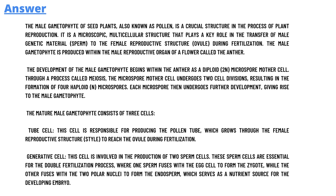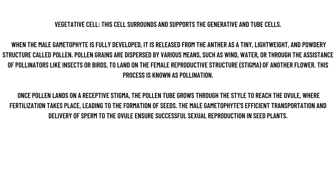When the male gametophyte is fully developed, it is released from the anther as a tiny, lightweight, powdery structure called pollen. The pollen gets dispersed by various means such as wind, water, and through the assistance of pollinators like insects or birds, to land on the female reproductive structure of another flower. This process is known as pollination.